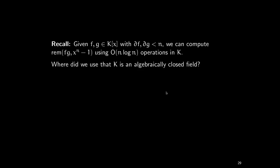When did we really use that k is algebraically closed? We didn't use it at all. What we really used was only that k contains roots of unity, because otherwise we can't do the FFT. k being algebraically closed means every polynomial factors completely — that's more than we really used. What we really used was that x^n minus 1 factors completely, because that's equivalent to saying that k contains a primitive nth root of unity.